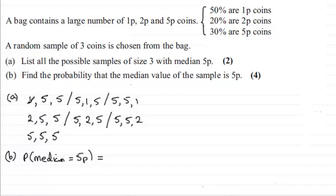The probability of getting a 1p coin, we know that 50% are 1p coins so that's going to be 0.5. And then we would multiply that with the probability of getting a 5p coin which is a 30% chance so that's 0.3. And then we'd have another 5p coin which would be times with another 0.3. So that's going to be 0.5 × 0.3².